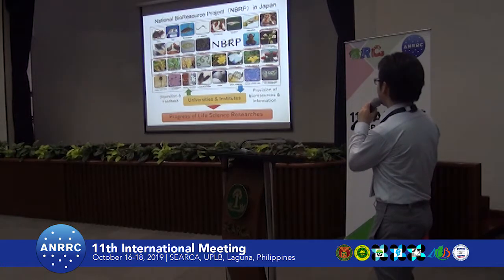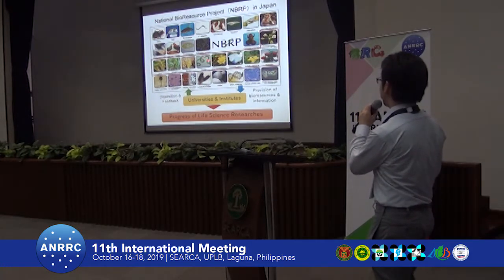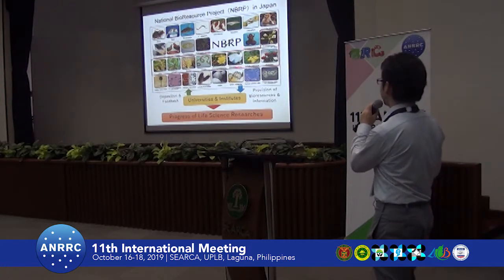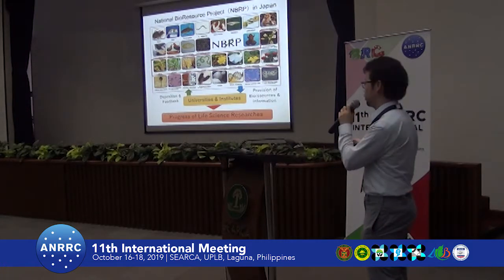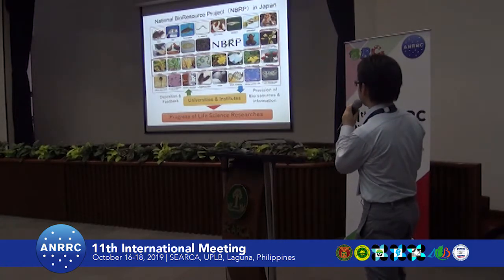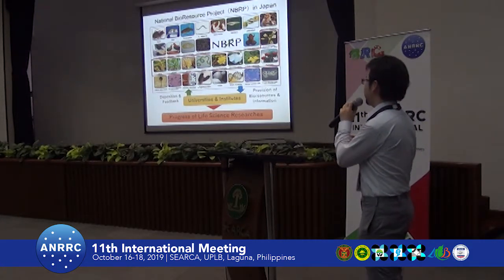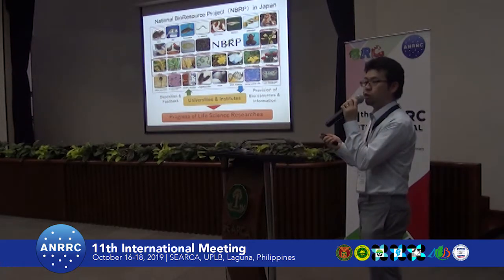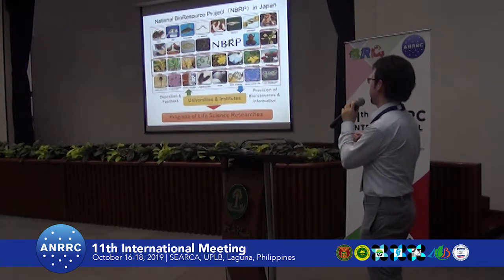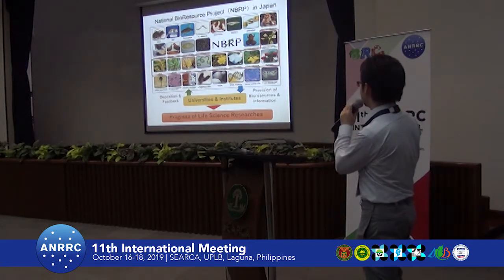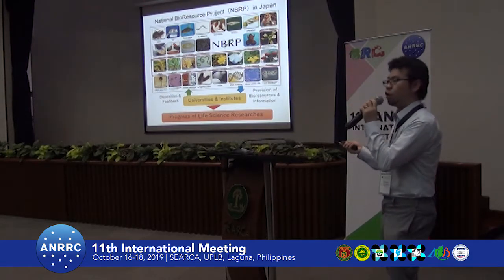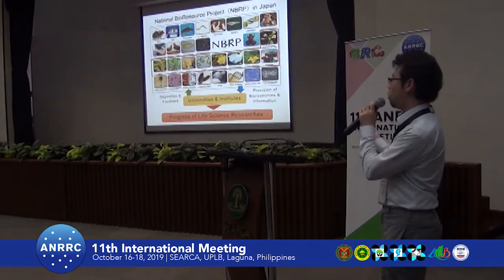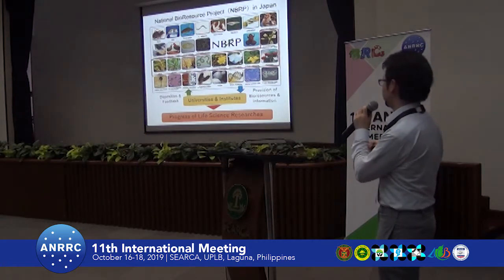Among the 30 bio-resources, there are nine plant bio-resources such as Arabidopsis, rice, wheat, barley, algae, Chrysanthemum, Morning Glory, lotus, and tomato. Today I will just talk about the tomato resources. Briefly, the objective of this NDRP project is to provide the bio-resources to not only local but also overseas researchers.